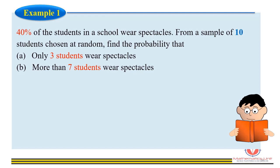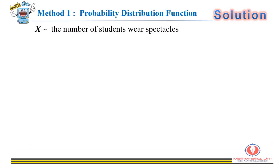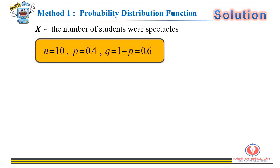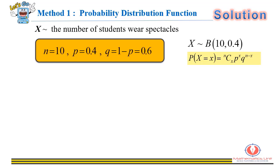Example 1: 40% of students in your school wear spectacles. From a sample of 10 students chosen at random, find the probability that: (a) only three students wear spectacles, and (b) more than seven students wear spectacles. Let x be the number of students wearing spectacles. Here p = 0.4, q = 0.6, and n = 10, so x ~ Binomial(10, 0.4).